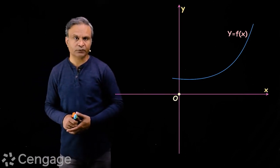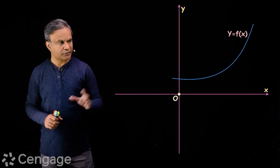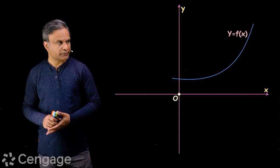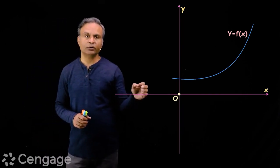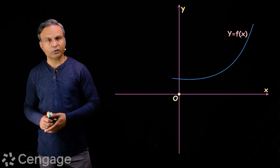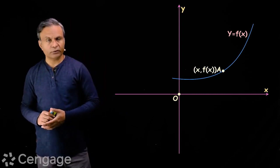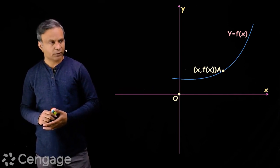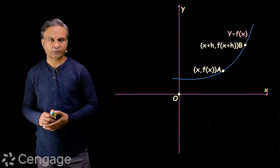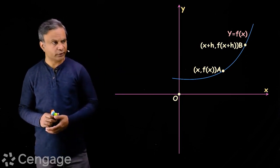Let's understand this with the help of a continuous function. Here we have the graph of a continuous function y = f(x). A continuous function is well-defined at each point and has a limiting value equal to the value of the function at that point. Consider a fixed point A on the curve having coordinates (x, f(x)) and a variable point B to the right of A having coordinates (x+h, f(x+h)).